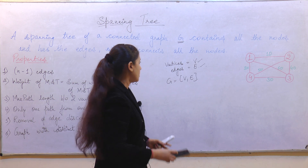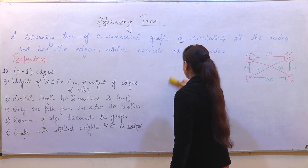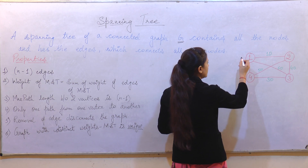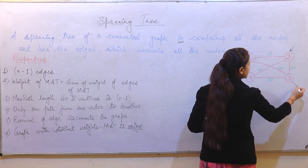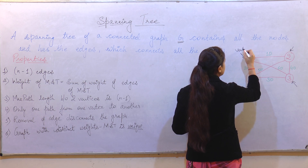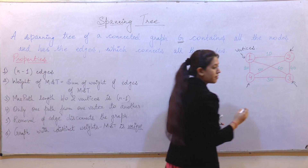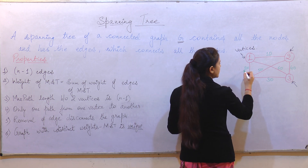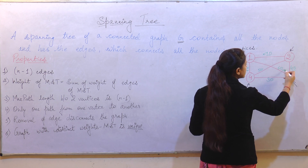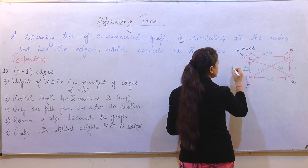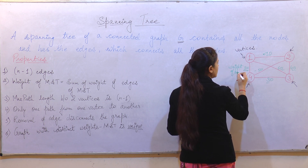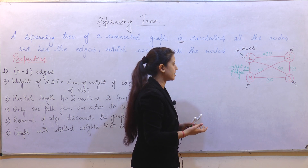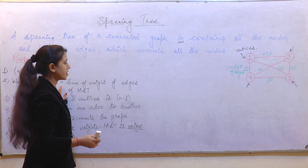We will study the properties of spanning tree with the given example. The vertices are 1, 2, 3, and 4, and the edge weights are 20, 10, 40, 60, 50, and 30. These are the weights of the edges which we will consider while calculating the weight of the minimum spanning tree.